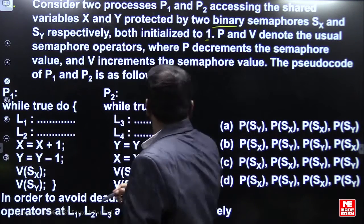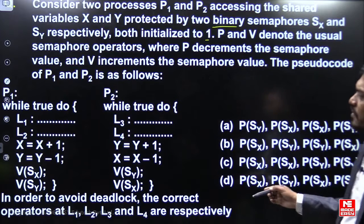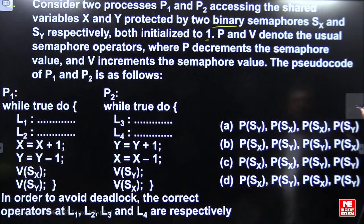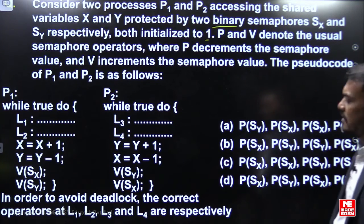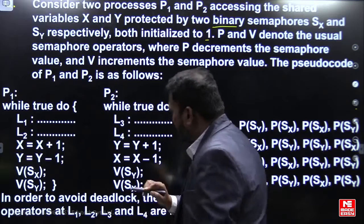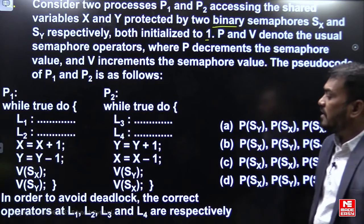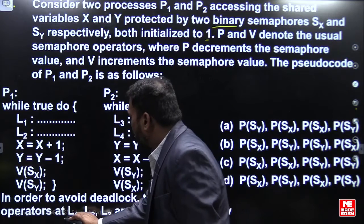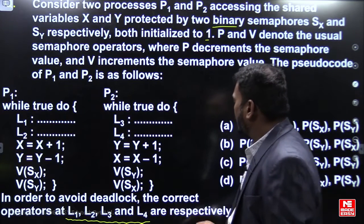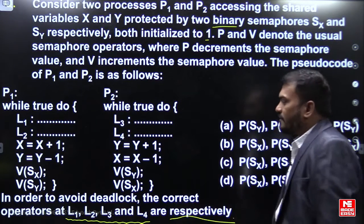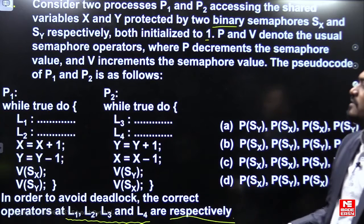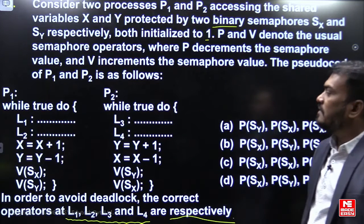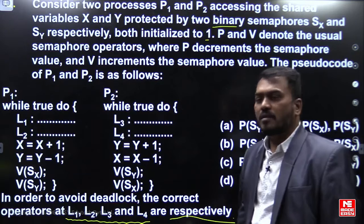This is the process P1 code and this is the process P2 code. The question is asking: in order to avoid deadlock, what should be the correct operations on L1, L2, L3, and L4 respectively?